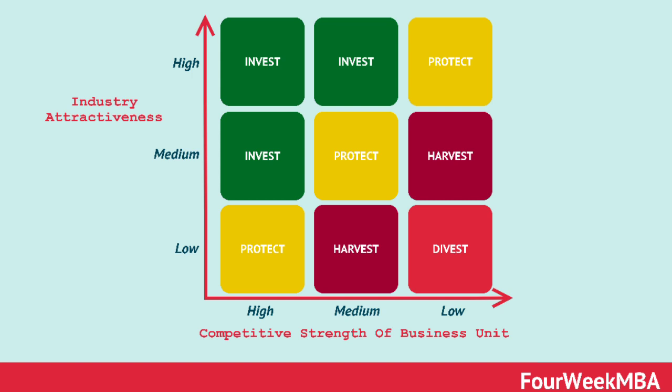Moving to the second lane: the one in green has medium market attractiveness and high competitive strength, meaning it has a future and can easily gain high market attractiveness — so you invest in it. The one in yellow has medium market attractiveness and medium competitive strength — you protect it, because it is likely to have a future. The one in red has medium market attractiveness but low competitive strength — you harvest what you invested, because its future is not bright.